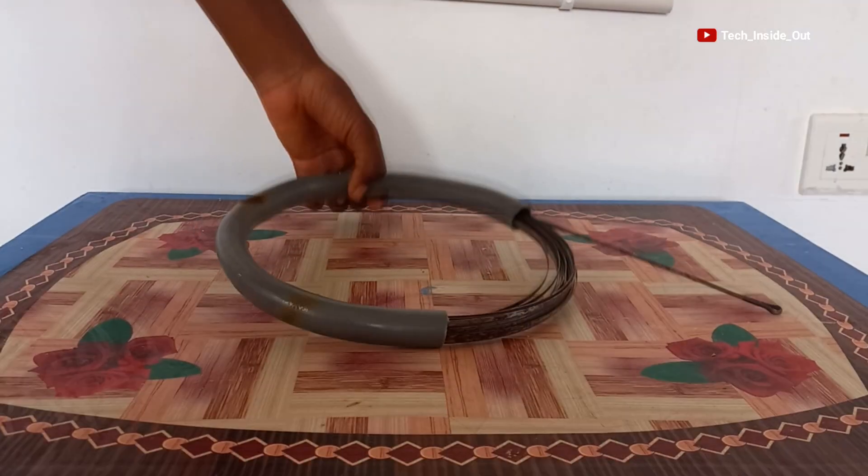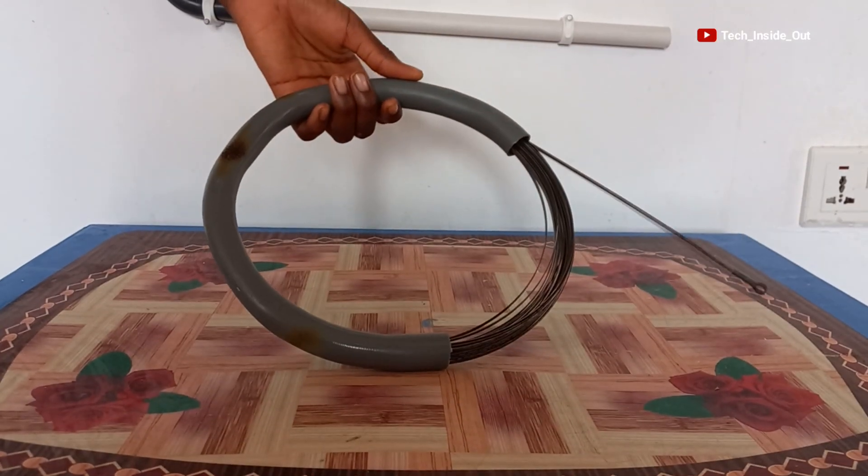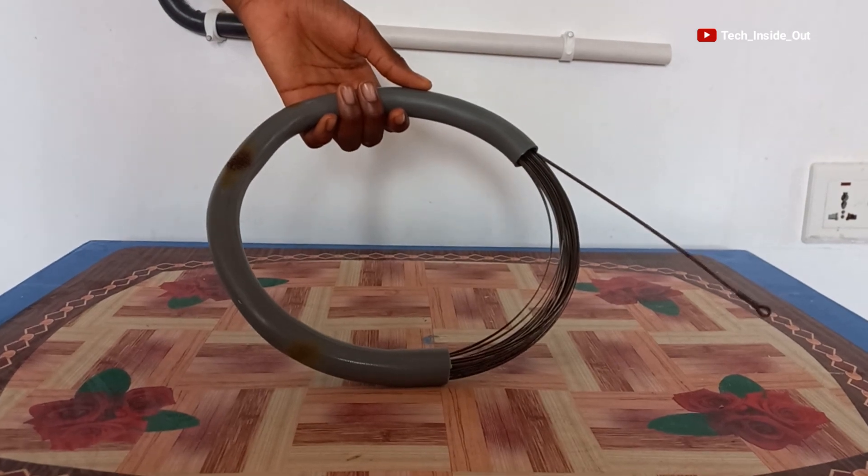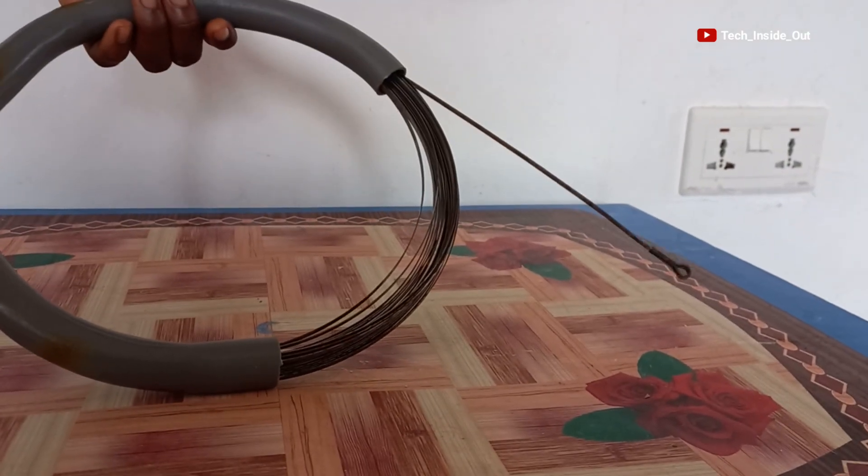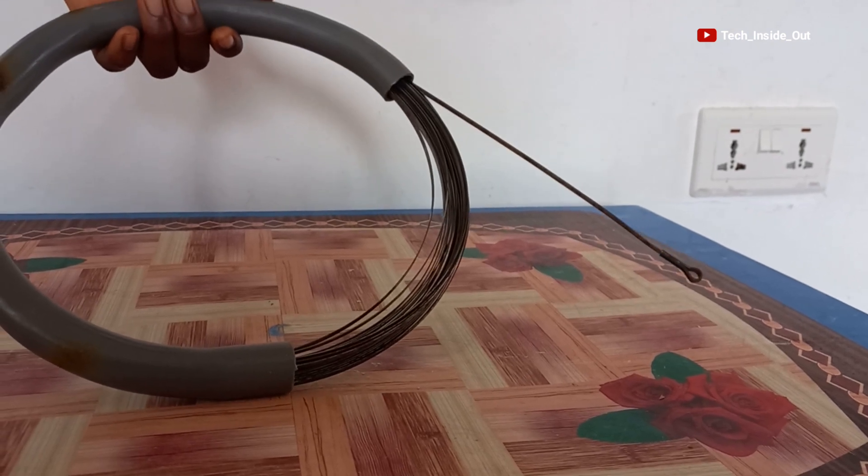We require this simple tool called a fishing tape. It is a thin steel material that helps to route cables through walls and conduits. So let's see how it is used.